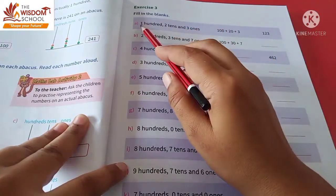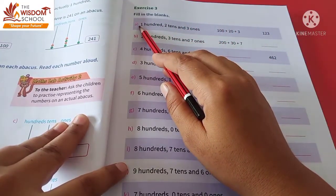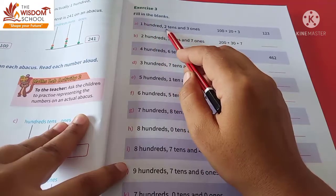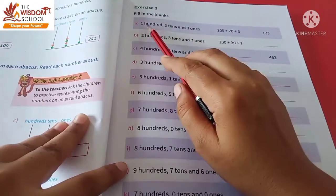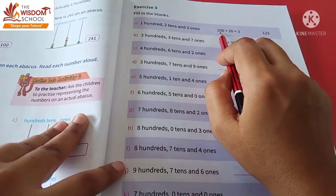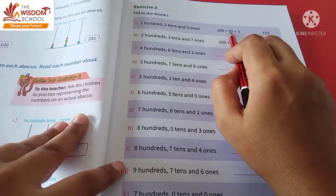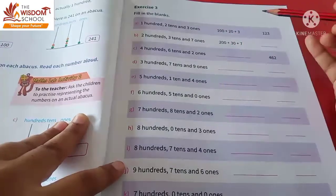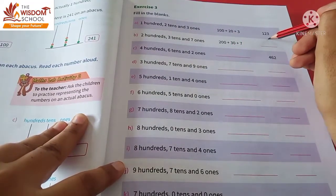The first example is already given to us: 102 tens and 3 ones. We will write it as 100 plus 20 plus 3, and then it forms a number which is of three digits, so we will write that number here.